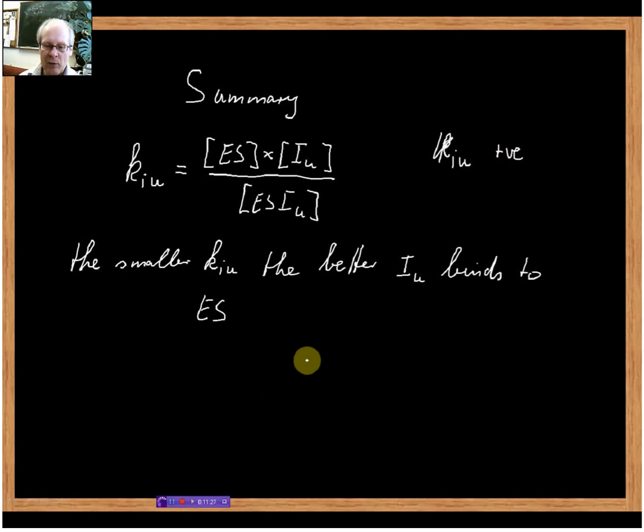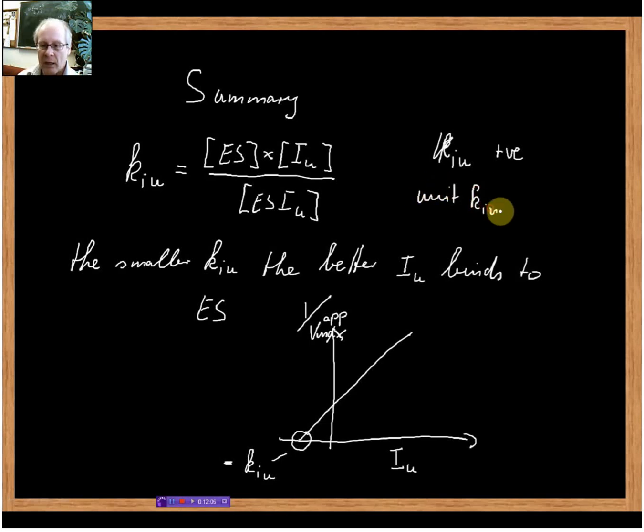We find KiU if we plot in a Dixon plot inhibitor concentration versus 1 over Vmax apparent. We get a straight line, and this intercept with the x-axis gives us minus KiU. The unit for KiU is concentration.